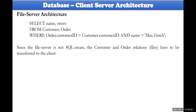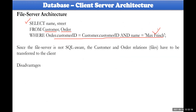For example, a query like 'SELECT name FROM customer and order WHERE a specific condition' may require only one particular person's information, but the file server gives complete information from both the customer and order files.